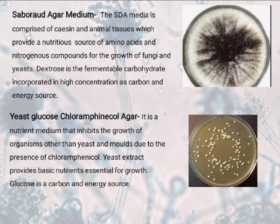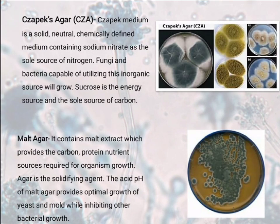Now let us discuss Yeast Glucose Chloramphenicol Agar. It is a nutrient medium that inhibits the growth of organisms other than yeast and molds due to the presence of chloramphenicol. Yeast extract provides basic nutrients essential for growth. Glucose is a carbon as well as energy source. The other agar is Czapek agar, i.e., CZ agar. Czapek media is a solid, neutral, chemically defined medium containing sodium nitrate as the sole source of nitrogen. Fungi and bacteria capable of utilizing this inorganic source will grow. Sucrose is the energy source and the sole source of carbon.